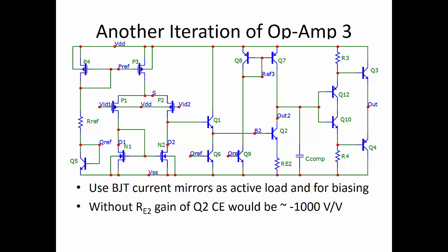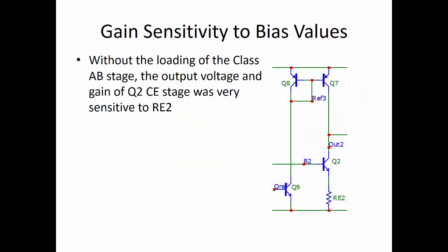Without that RE2, the gain of that amplifier would have been 1,000 volts per volt, just the Q2 and Q7 active load amplifier. With RE2 and the loading due to the class AB amplifier, the gain of that single stage was about 200 volts per volt. So overall, this amplifier had a gain of roughly 6,000 volts per volt.